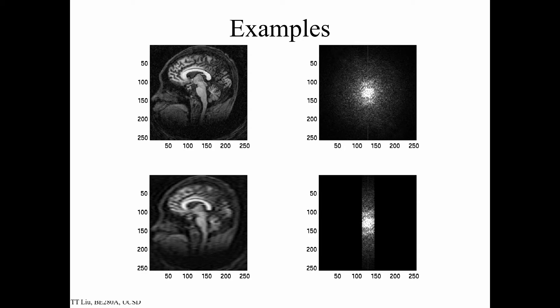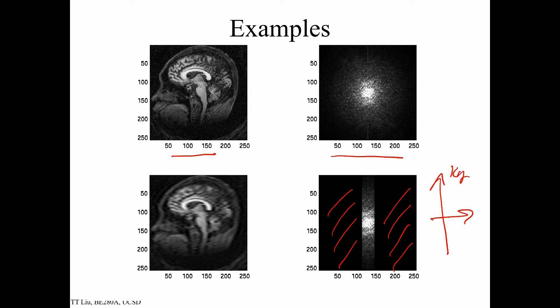Here we have an image and its Fourier transform. In this example, all the data along the kx axis has been zeroed out. The missing components are those with left-right variations. As a result, all the left-right edges in the image become blurry — for example, the edges of the corpus callosum going left to right are noticeably fuzzier — because we've lost the detail of left-right variations in k-space.